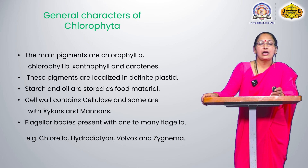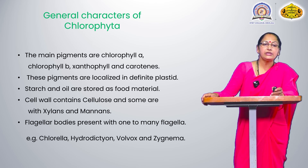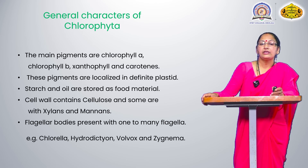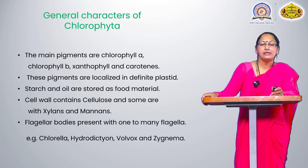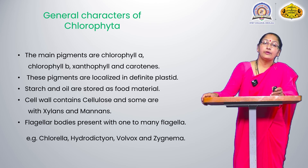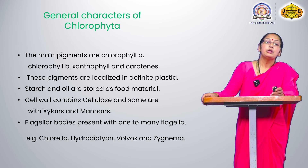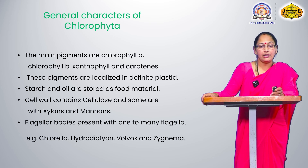The general characteristics of Chlorophyta: the main pigments are chlorophyll A, chlorophyll B, xanthophyll, and carotenoids. These pigments are localized in definite plastids. Starch and oil are stored as food material. The cell wall contains cellulose, and some have xylans and mannans.